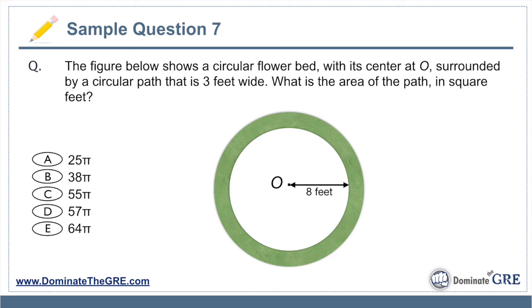In the figure below, a circular flower bed with its center at O is surrounded by a circular path that is three feet wide. What is the area of that path in square feet? In other words, what is the area of the shaded region? Go ahead and press pause. Give this one a try on your own based on what I just taught you. If you don't have the tools in your tool belt because you haven't done circles in a while or you haven't watched those videos, then you can just fast forward and watch me do it. But give it a try on your own, and we'll come back and talk about it together.